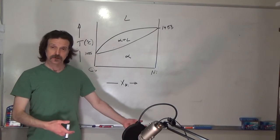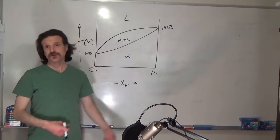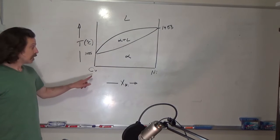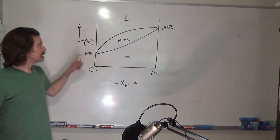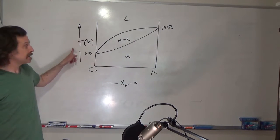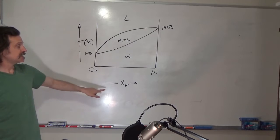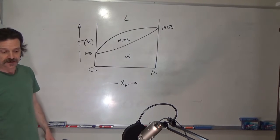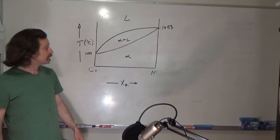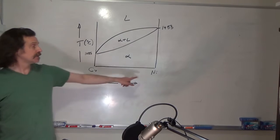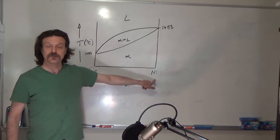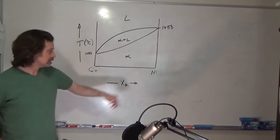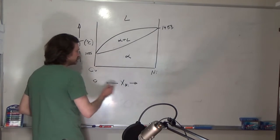Let's talk about a simple materials phase diagram. This is the phase diagram for copper-nickel. The y-axis is temperature in degrees Celsius. The x-axis is the fraction of nickel. On the far left we have pure copper, on the far right we have pure nickel. So x_Ni goes from 0 to 1.